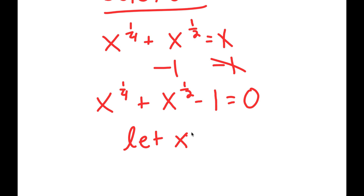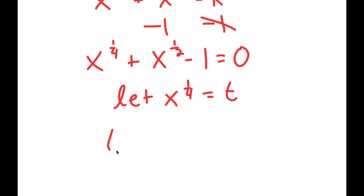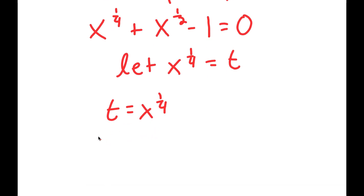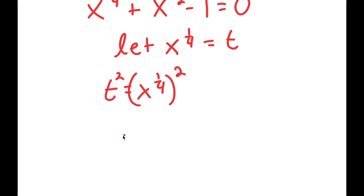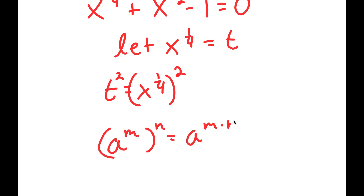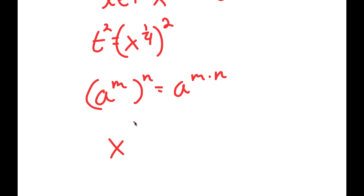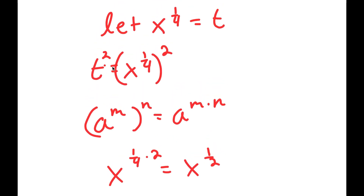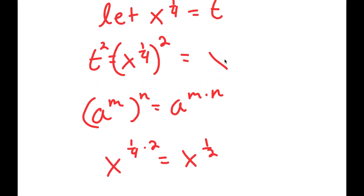Now I'm going to let x to the power of one-fourth equal the variable t. So t is equal to x to the power of one-fourth, meaning if I take the square on both sides, I get t squared is equal to x to the power of one-fourth squared. Since a to the power of m to the power of n equals a to the power of m times n, x to the power of one-fourth squared equals x to the power of one-half. So t squared is equal to x to the power of one-half.